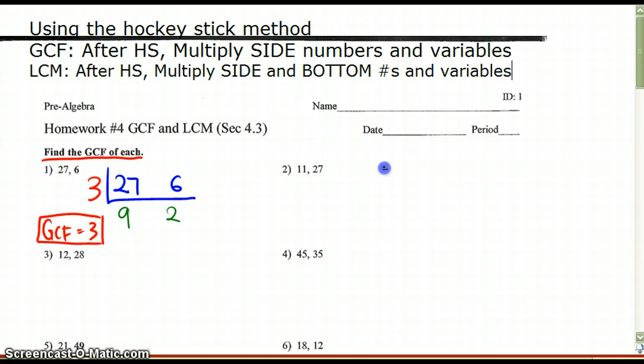Number 2, 11 and 27. I'm going to do my hockey stick. 11 happens to be a prime number, and because of that, 1 is going to be my greatest common factor because no other number above 2 can be multiplied. So in number 2, my answer is 1.